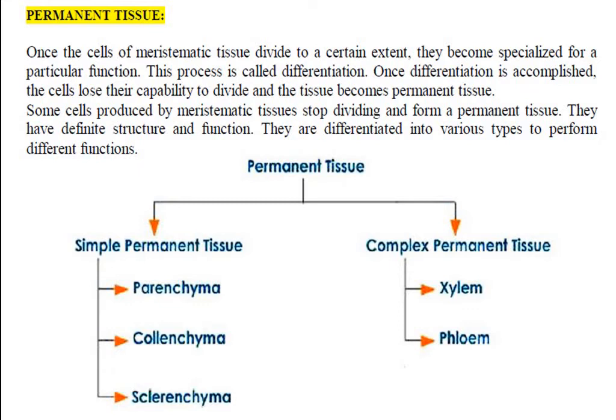Now, when these meristematic tissues divide to a certain extent and become older, they become specialised for a particular function. From these meristematic tissues in the growing parts, other tissues are derived. When they become specialised for particular functions, their differentiation process is accomplished.